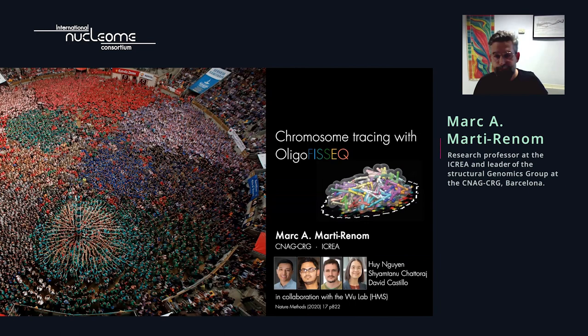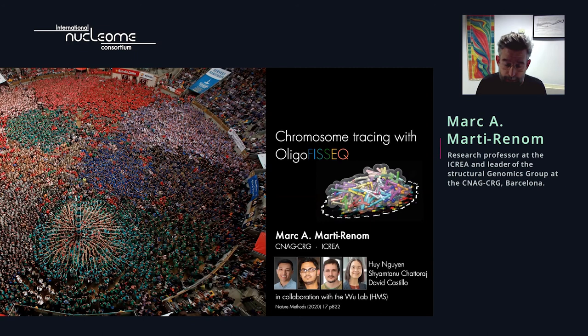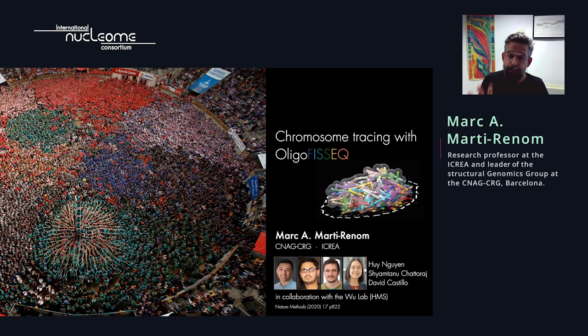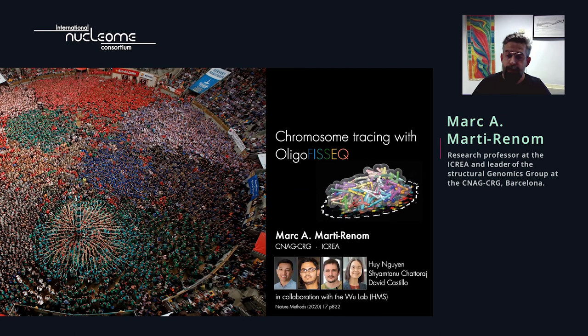Now the second part of my talk: chromosome tracing with OligoPhysic. This is also an imaging tracing method, but here we don't actually need a three-dimensional model with HI-C. Our lab contributes with image analysis — the first time we entered the field of image analysis — and the tracing itself, which is not trivial with confusing data. From the Wu lab, Shuo and Shema designed the oligos and obtained the images. From our lab, David Castillo did all the image analysis, tracing, and computational analysis.